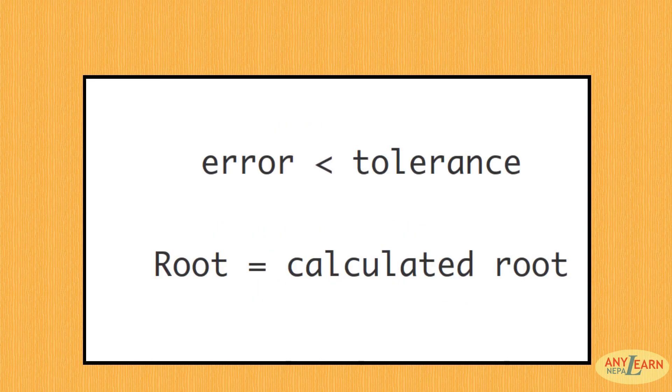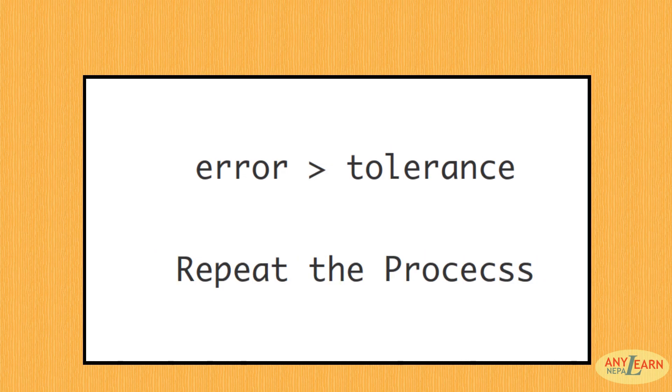If we get an error less than our tolerance value, then we get our root as the calculated root. Otherwise, we repeat the process. So this way the Newton Raphson method works.